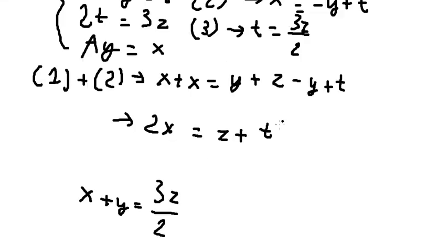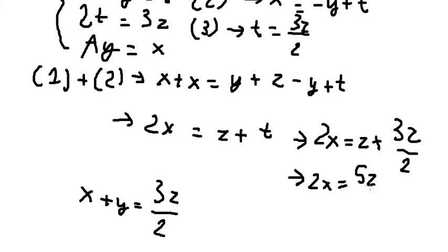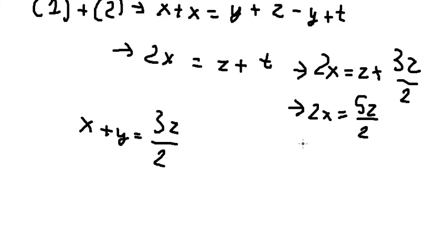And then t we change for this one. So this one we have 2x equals to 5z over number two, and now we divide both sides by number two.